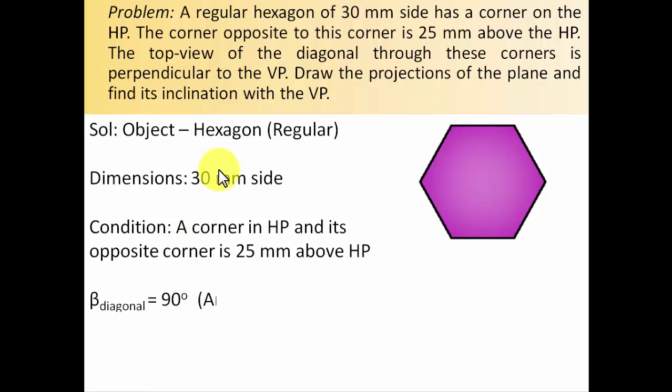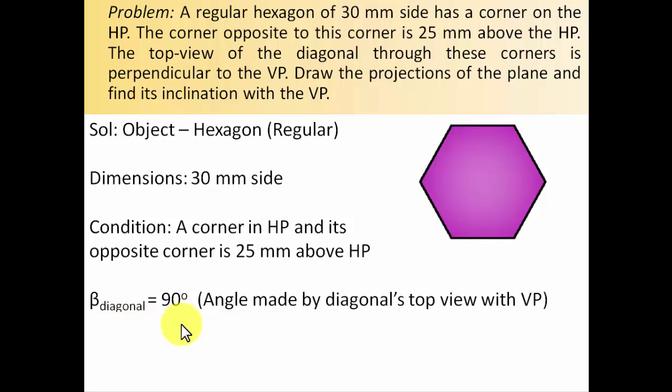So let's get started. The beta diagonal is equal to 90 degrees. Stay tuned because in the next section I'm going to demonstrate how this object has been really kept with respect to HP and VP.